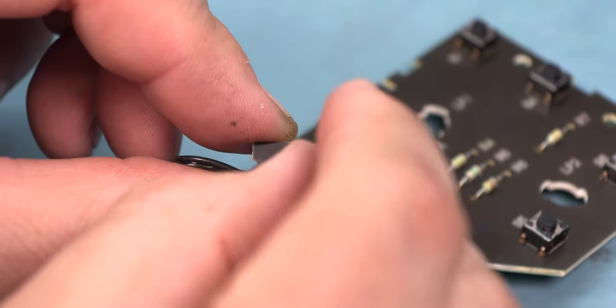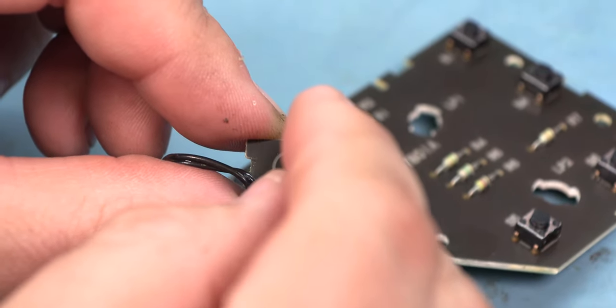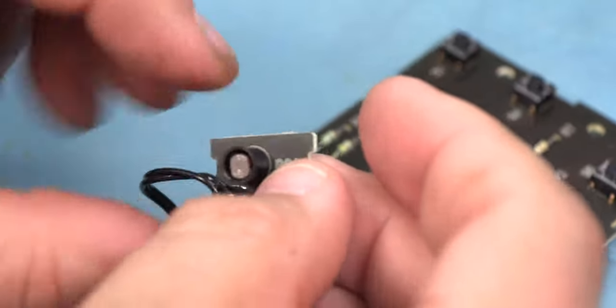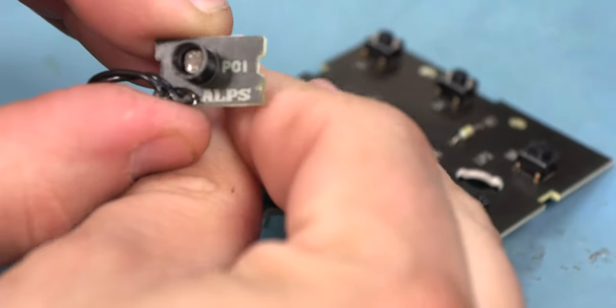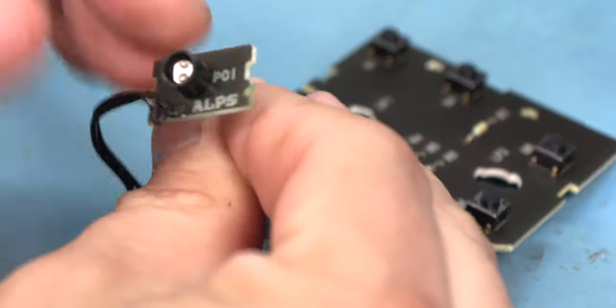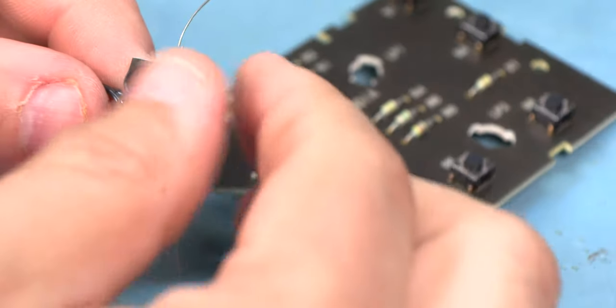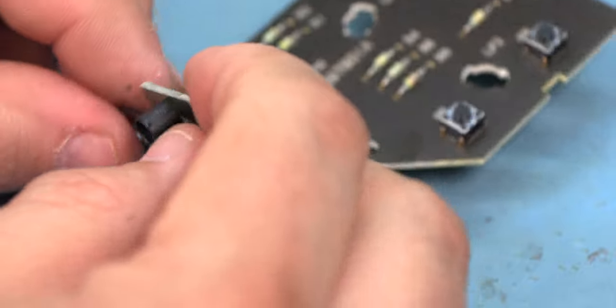Next, we'll install the photocell into the circuit board, again with one lead through each hole. We'll pull it through the back side of the circuit board and we'll bend those leads apart to hold the component in place while we solder it.